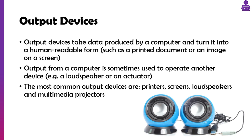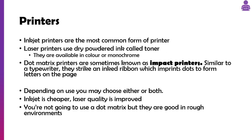The most common output devices are printers, monitors, screens, TVs, and loudspeakers. For printers, we've got three main types: inkjet printers spray ink onto the page; laser printers use dry powdered ink called toner which is then heated and melted onto the page; and dot matrix printers are a really old kind of printer still used sometimes in factories. They're impact printers that actually punch into the page, which is why they're really noisy.